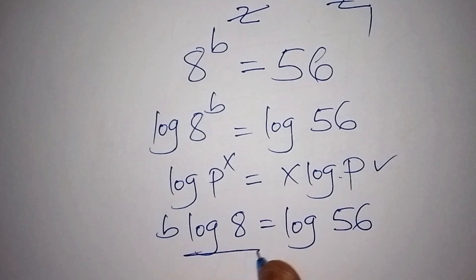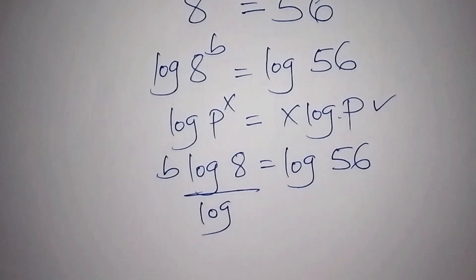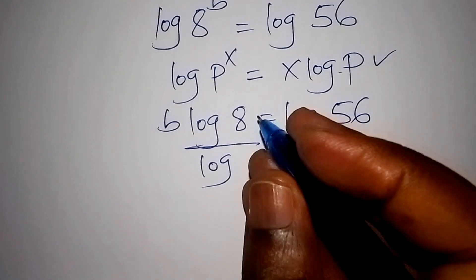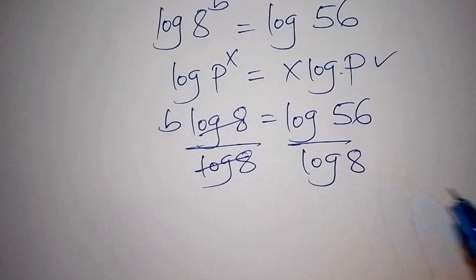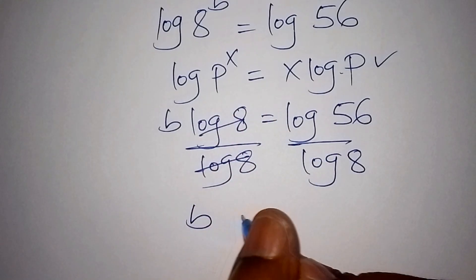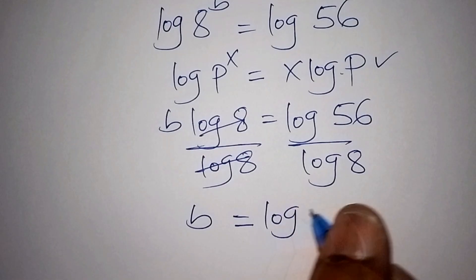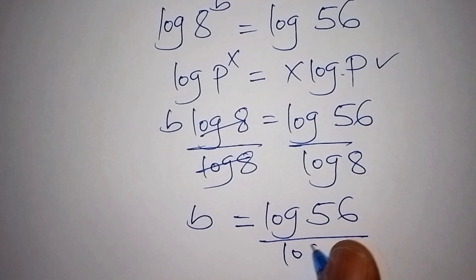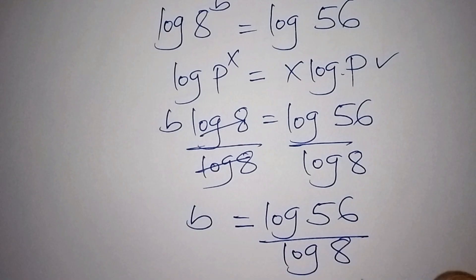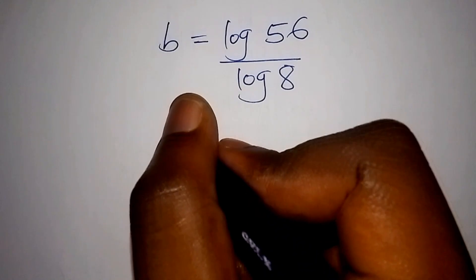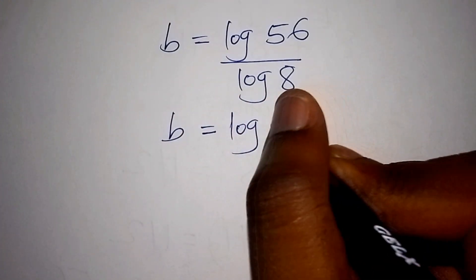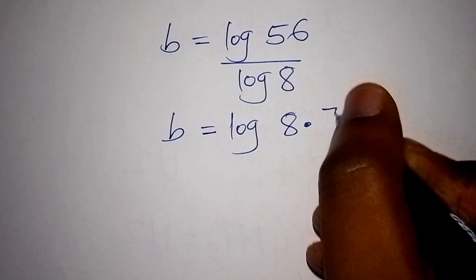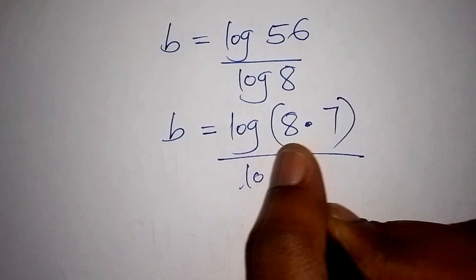From here we divide both sides by log of 8. Log 8 and log 8 cancel, leaving b equals log of 56 over log of 8. We can still proceed by writing 56 as 8 multiplied by 7, so b equals log of 8 times 7 all over log of 8.